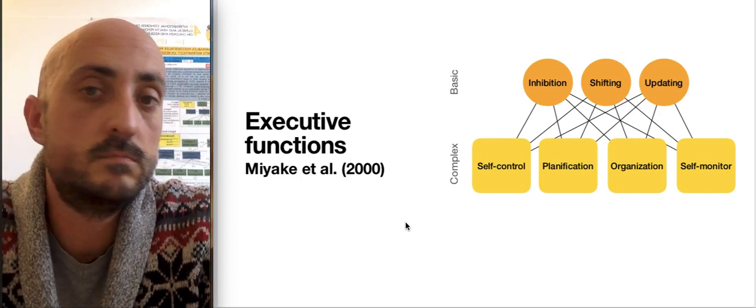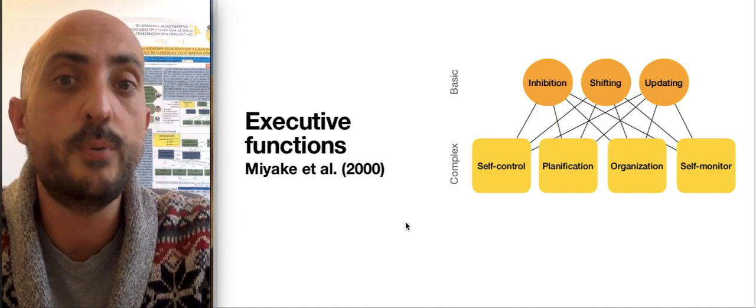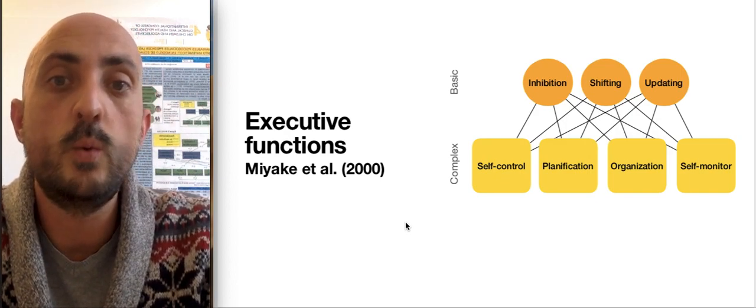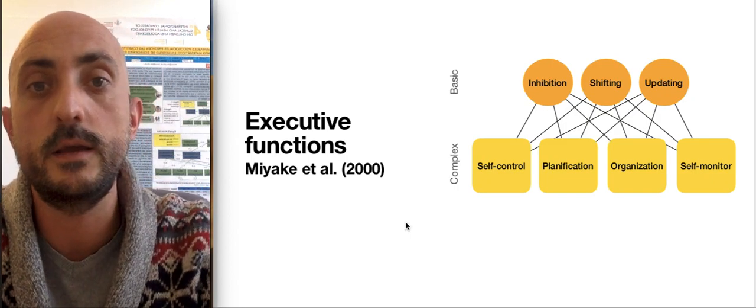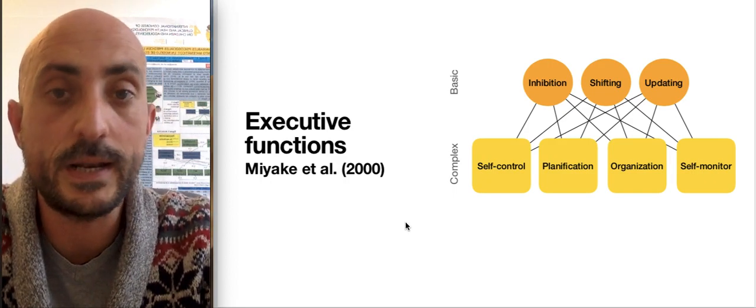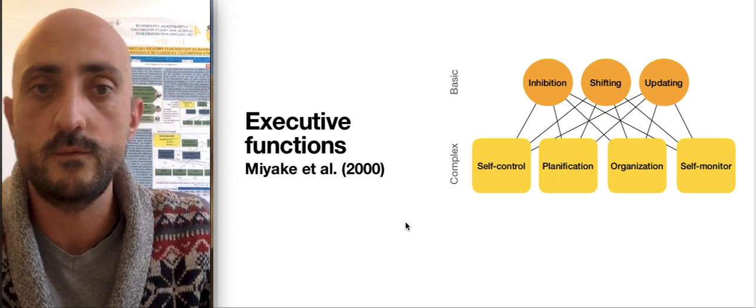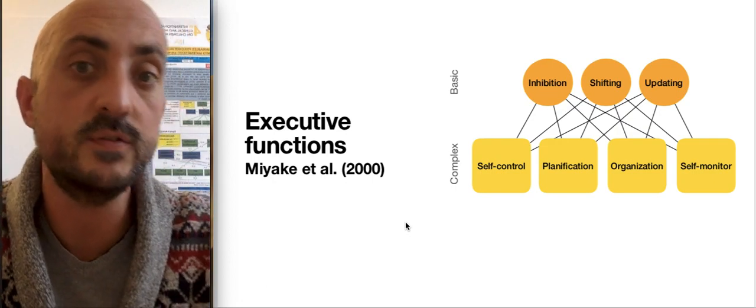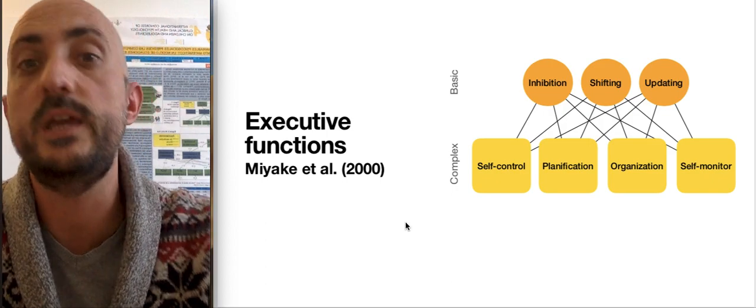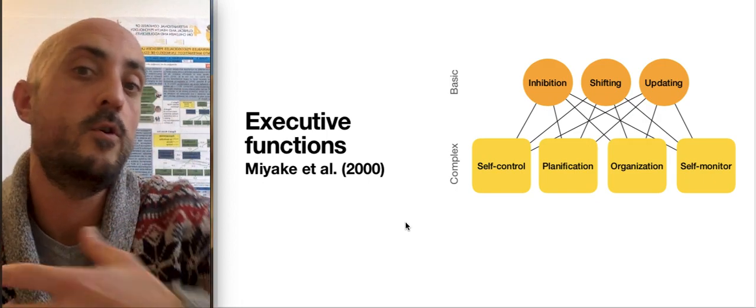Beyond these relatively daily life examples, inhibition, shifting, and updating are very important for educational purposes. For example, in mathematics and also in linguistics, when we have to perform any educational activity, these basic executive functions must be always executing properly in order to perform adequately any problem that we have to solve. It is very important for our lives and for educational purposes, and that's why it is very important to know if we can improve these executive functions.